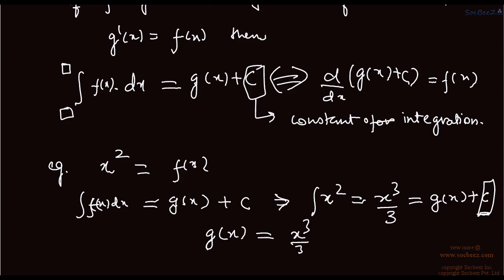So whenever you are integrating a function of x, you have to add a constant. So g(x) is x cubed by 3 and this integration will be x cubed by 3 plus c.